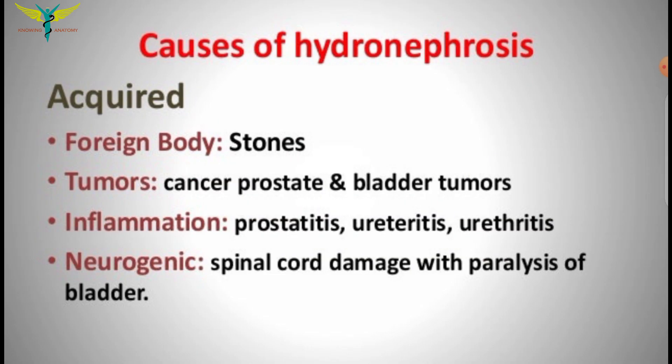The acquired causes include foreign bodies like stones — blockage of the renal pelvis and calyx by a stone causes bulging of the renal cavity above the blockage, leading to dilatation. Tumors such as prostate cancer and bladder tumors, inflammation of the prostate, urethra, and ureter, and neurogenic causes such as spinal cord damage with paralysis of the bladder are also acquired causes.